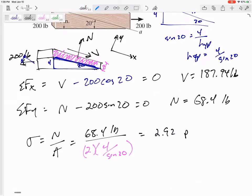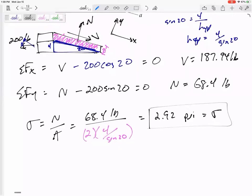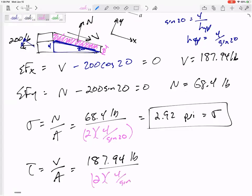2.92 pounds per square inch. The tau, 187.94. Same area, two, four over sine 20. Is 8.03 PSI.